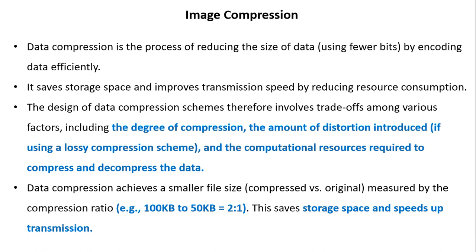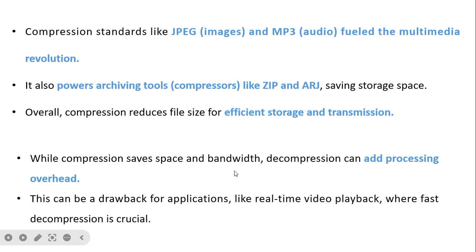Data compression achieves a smaller file size measured by the compression ratio, which saves storage space and speeds up transmission. Compression standards like JPEG and MP3 fuel the multimedia revolution. It also powers archive tools like ZIP and RAR, which save storage space. Overall, compression reduces the file size for efficient storage and transmission.